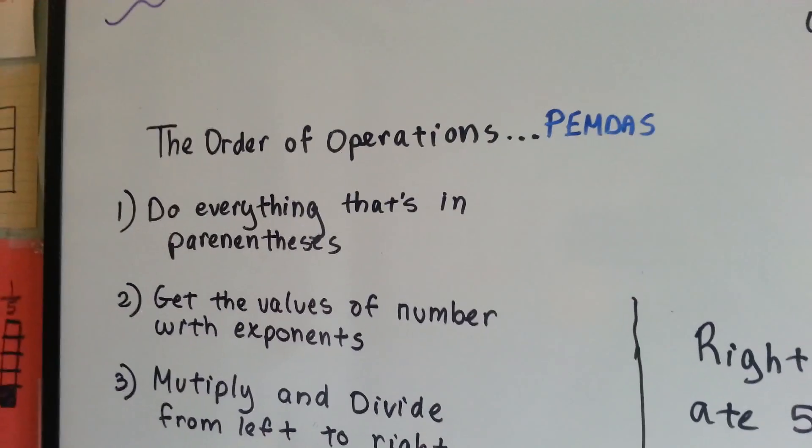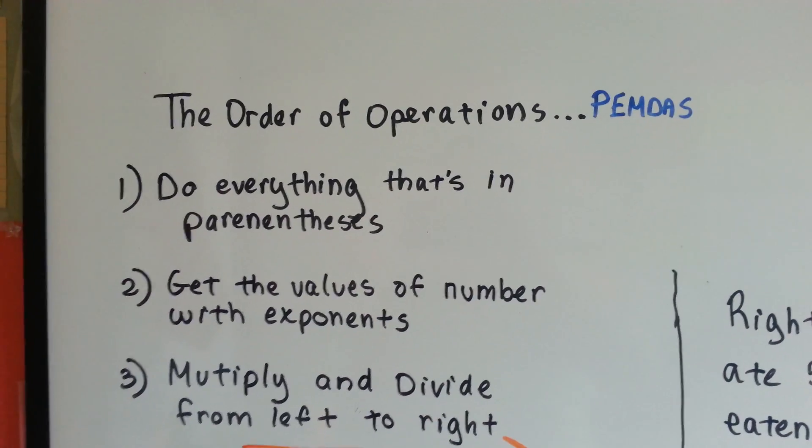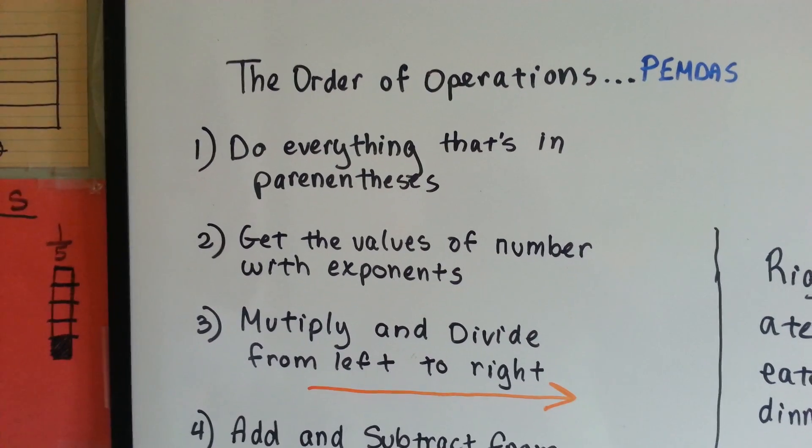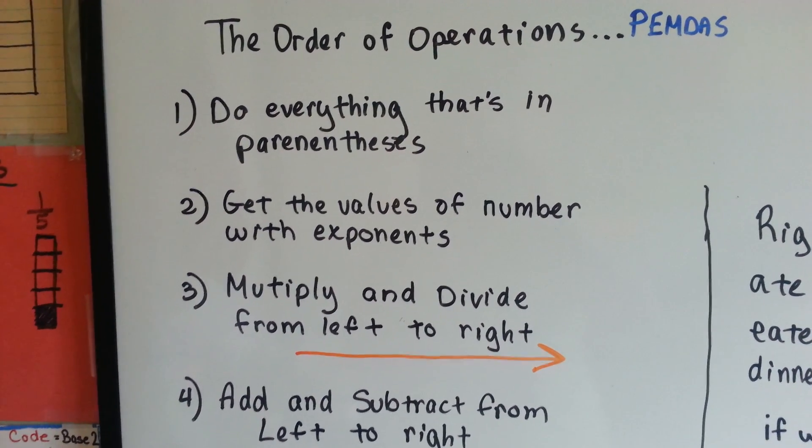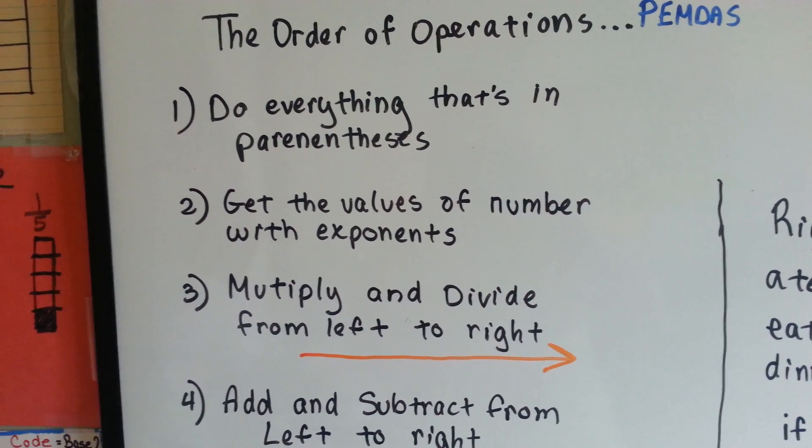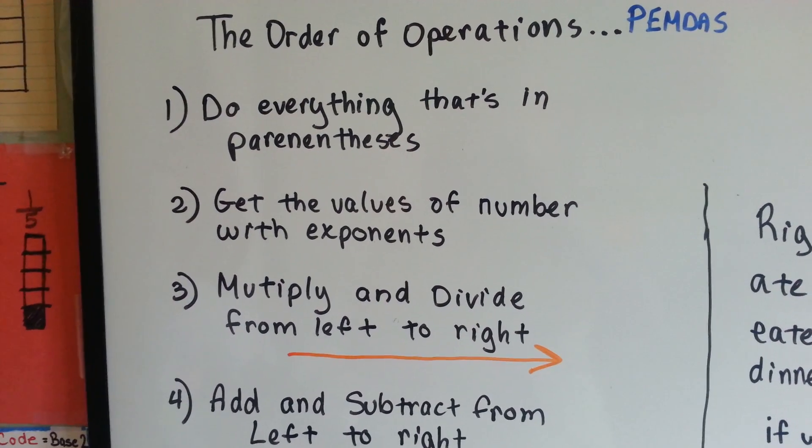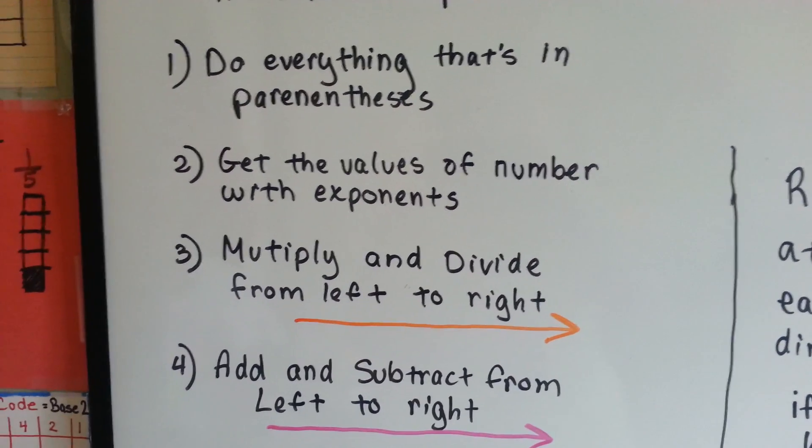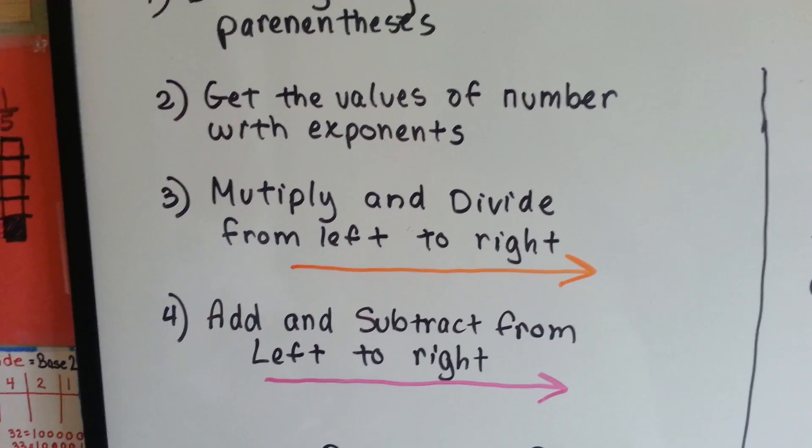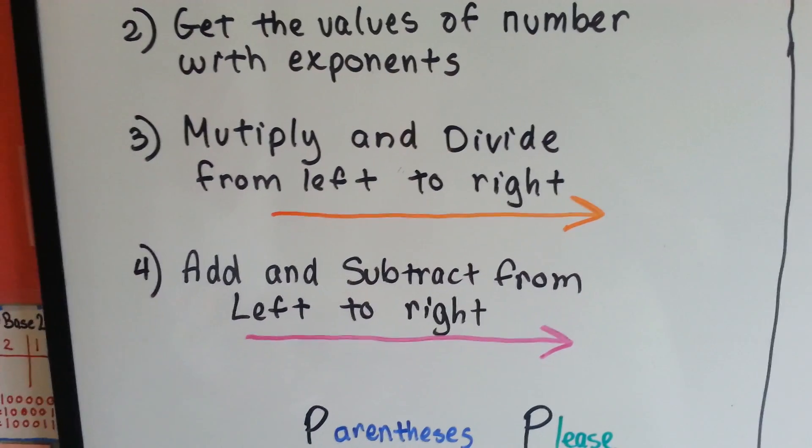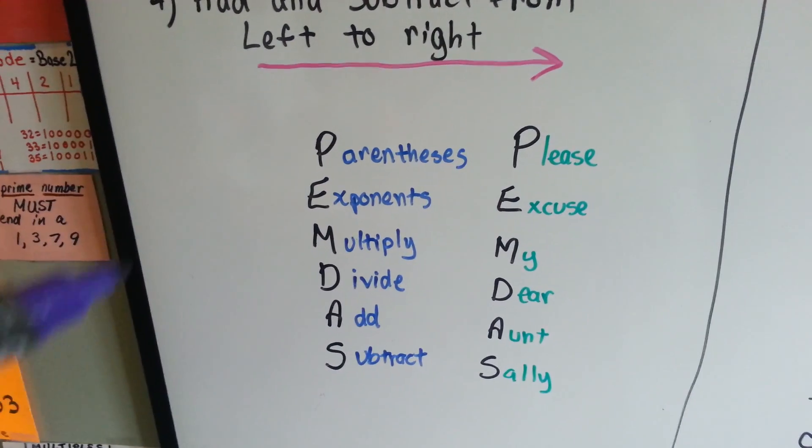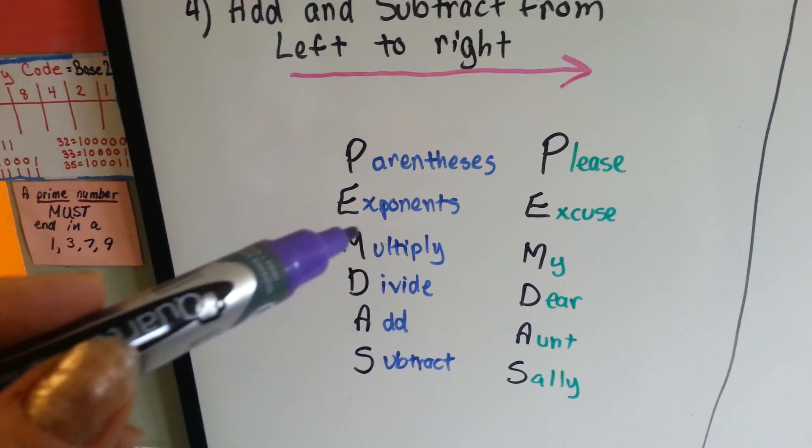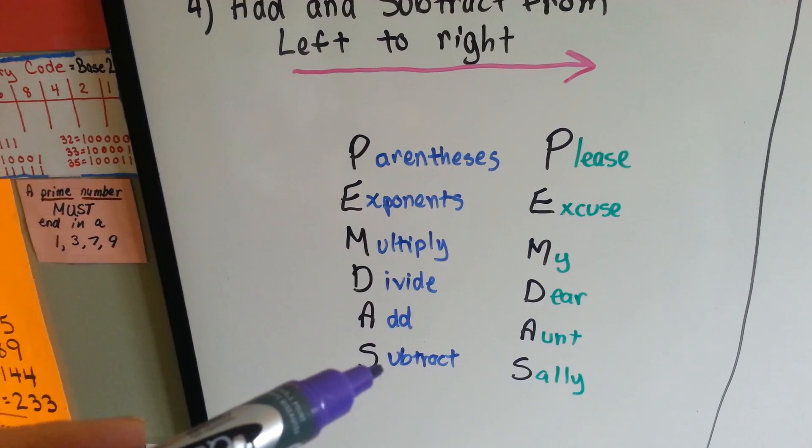The order of operations, also known as PEMDAS, is the first thing we do is everything that's in parentheses. Then, after that, we get the values of numbers with exponents. When that's done, we multiply and divide from left to right. After that's done, then we add and subtract from left to right. So we do parentheses, exponents, multiply, divide, add, subtract.